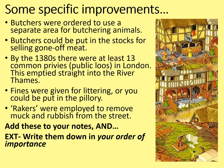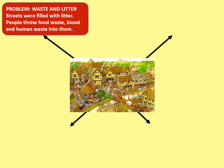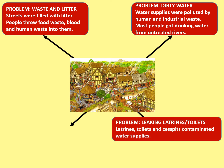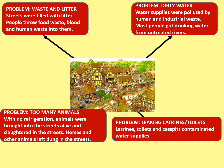We're now going to consider public health in a wider sense. Here are the problems. Waste and litter: streets were filled with litter — people threw food waste, blood, and human waste into the streets and rivers. Dirty water: water supplies were polluted by human and industrial waste, and most people got drinking water from untreated rivers. Leaking latrines and toilets: latrines, toilets, and cesspits contaminated the water supplies. And too many animals: with no refrigeration, animals were brought into the streets alive and slaughtered there, and horses and other animals left dung in the streets too.